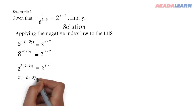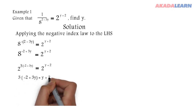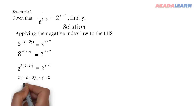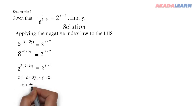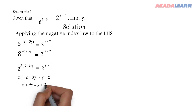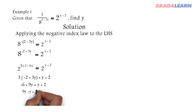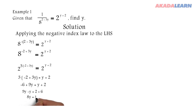So we have 3 into minus 2 plus 3y equals y plus 2. We open the bracket, then collect like terms: 9y minus y equals 2 plus 6. So 8y equals 8. We divide both sides by 8 and our y equals 1.